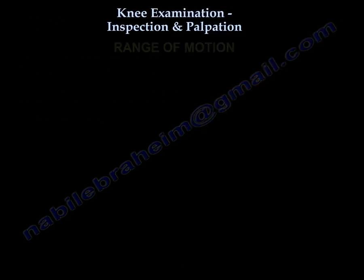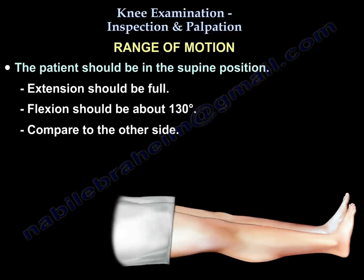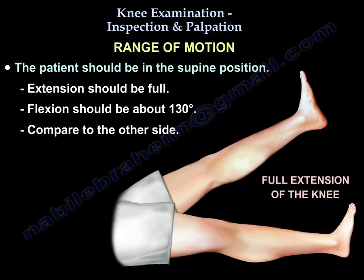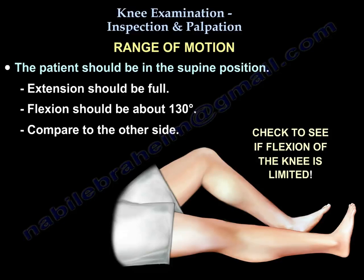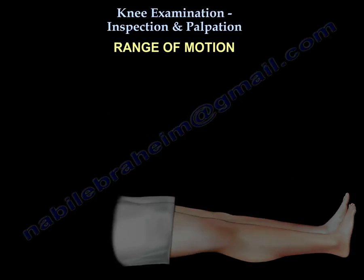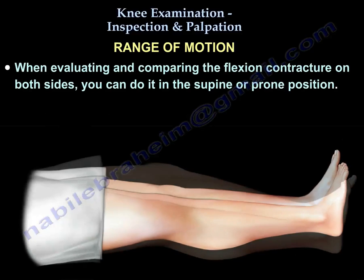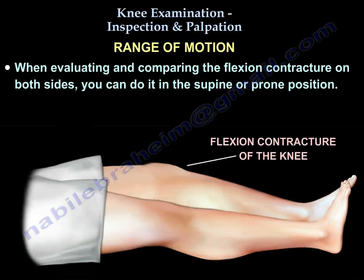For range of motion, with the patient supine, extension should be full and flexion should be about 130 degrees — compare to the other side. When evaluating and comparing flexion contracture on both sides, this can be done supine and also prone.